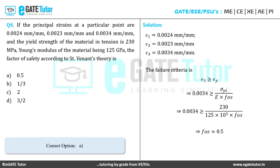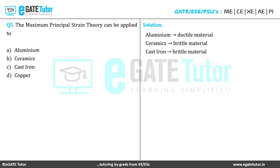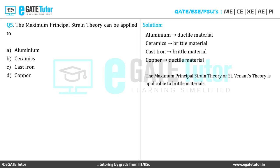Let us move on to question 5: The maximum principal strain theory can be applied to which materials? Aluminum and copper are ductile materials; ceramics and cast iron are brittle materials. The maximum principal strain theory is only applicable to brittle materials. Among the four options, ceramics and cast iron are brittle. Therefore, the correct answer is both option B and C.